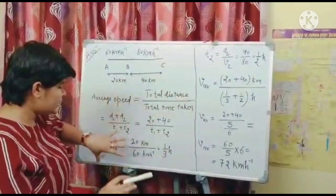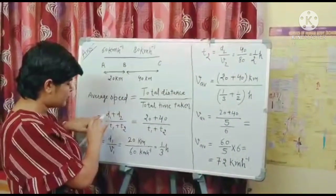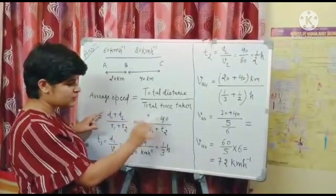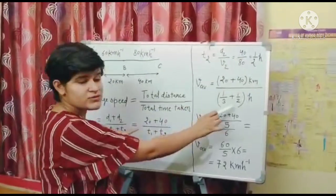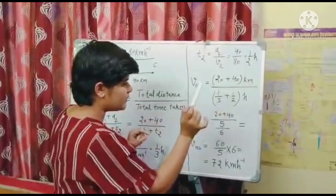Now we will put all these values into this formula. T1, T2 is 20 plus 40 and T1, T2 is 1 by 3. T1 is 1 by 3 and T2 is 1 by 2. So 1 by 3 plus 1 by 2.